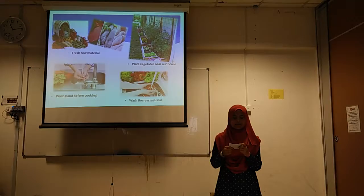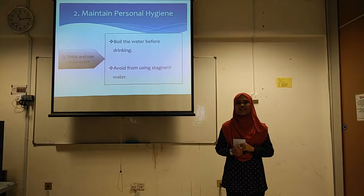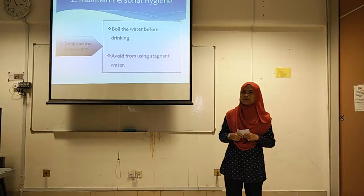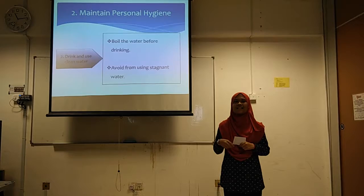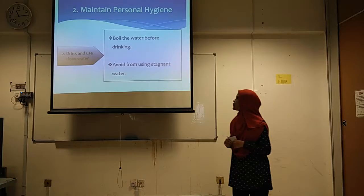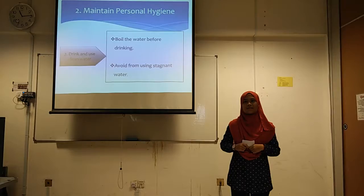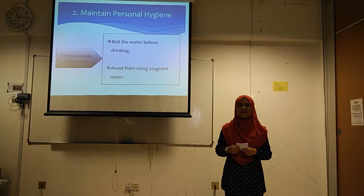In order to maintain our personal hygiene, we also have to drink and use clean water for our personal activities, for example brushing our teeth and washing our clothes. To make sure the water is clean and safe to use, we have to boil the water before drinking it. It is also better if we filter the water before boiling it at 100 degrees Celsius. Other than that, we have to avoid using stagnant water, because stagnant water may contain many contaminants such as bacteria and viruses, and using it for personal hygiene can lead to many diseases, for example malaria.